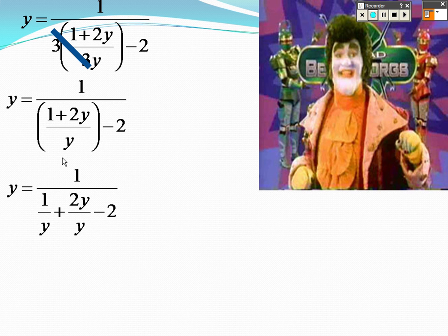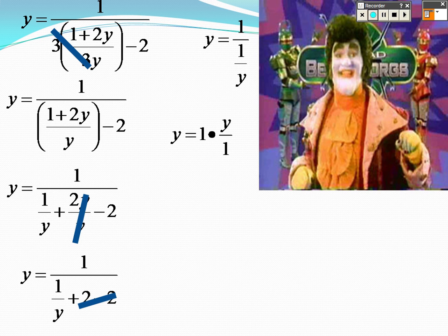The reason why I'm doing that is the y's cancel, and then the 2s will end up canceling. So 1 over 1 over y, which is like saying, why don't you do 1 times the reciprocal, and you end up getting y equals y.